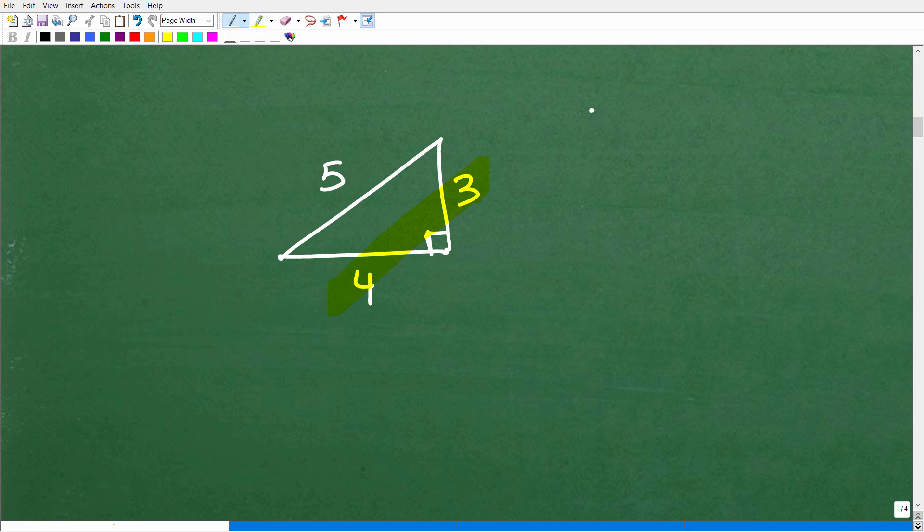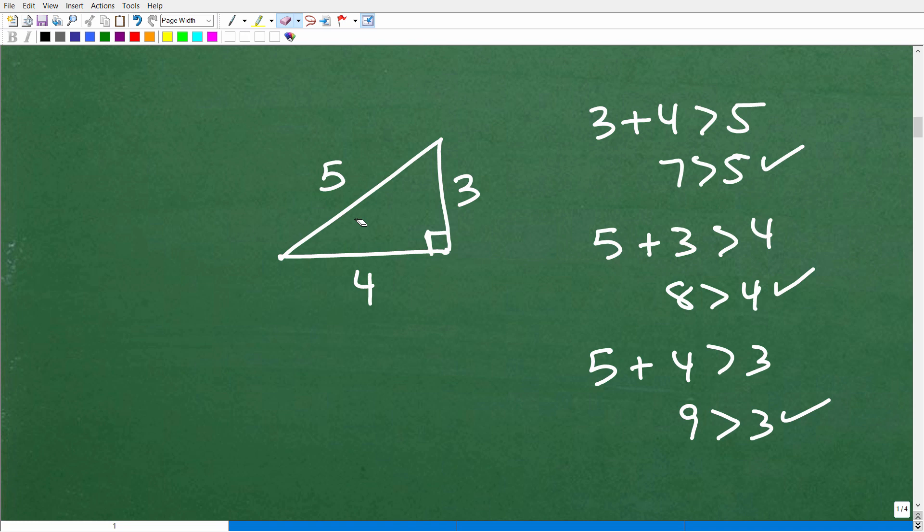But let's go ahead and test this triangle inequality. So we'll do three and four. So three plus four, is that greater than five? Well, of course, it is. Seven is greater than five. That checks out. Let's do five and three. Five plus three is greater than four. Eight is greater than four. That checks out. And let's see, we need to do five and four. And that's going to be five plus four. Is that greater than three? Nine is greater than three. That checks out as well. So when you have a triangle that is an actual triangle, it will always meet this triangle inequality. This is another basic fact that you want to know about triangles.